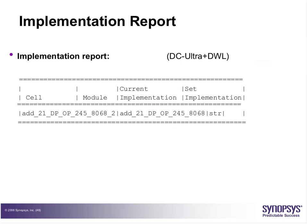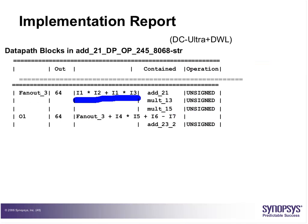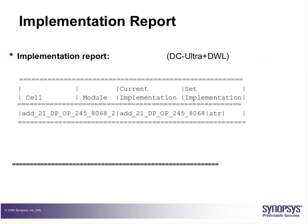This is the implementation report, showing what kind of implementation is used. It tells us the module name and that the implementation is STR — a generic data path implementation. So it does not tell us what kind of multipliers or what architecture is chosen at this stage.